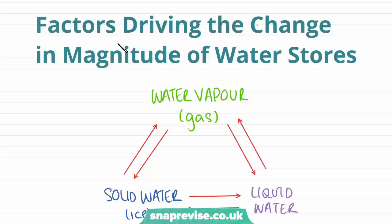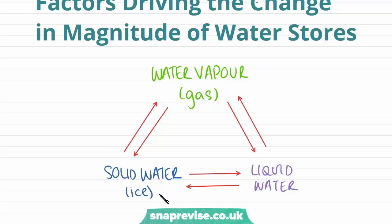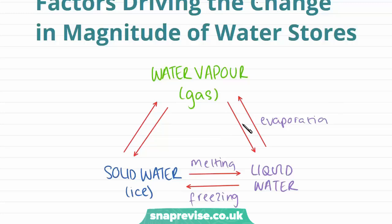Now we're going to look at the factors driving the change in magnitude of water stores — the transfer of water between its different stores. This diagram shows how water can move between a solid, a liquid and a gas. Solid to liquid is melting and freezing. Liquid water turns into a gas through evaporation, and gas turning into a liquid is called condensation. The process of water turning into a solid is called sublimation — that's ice turning into a gas straight away, skipping out the liquid state.